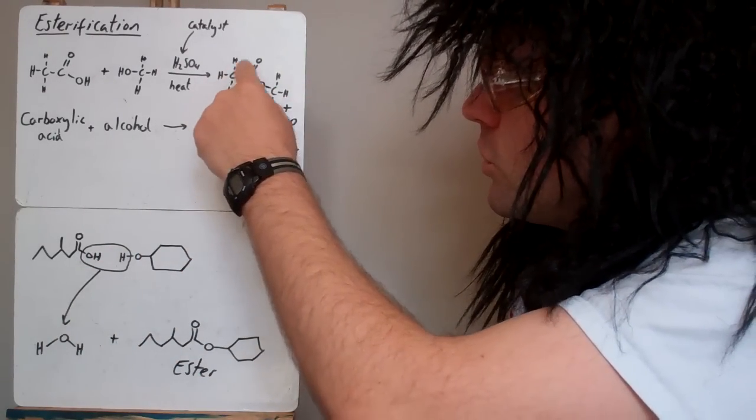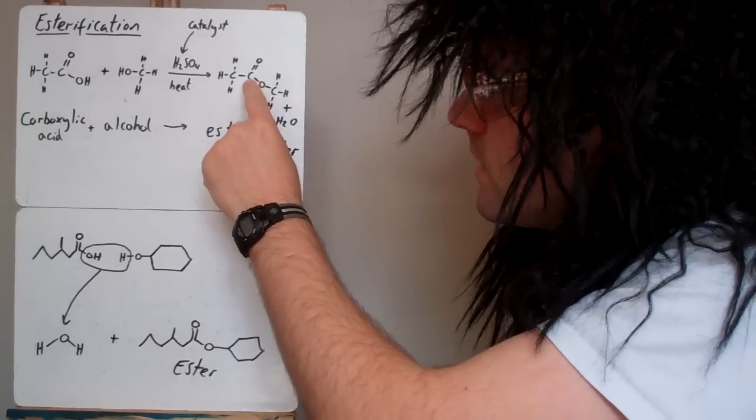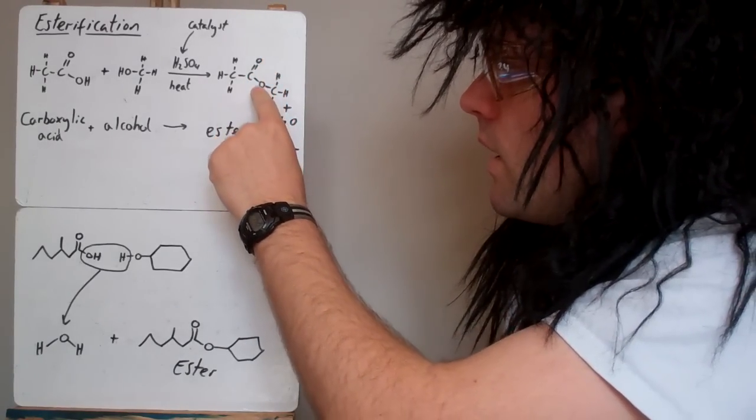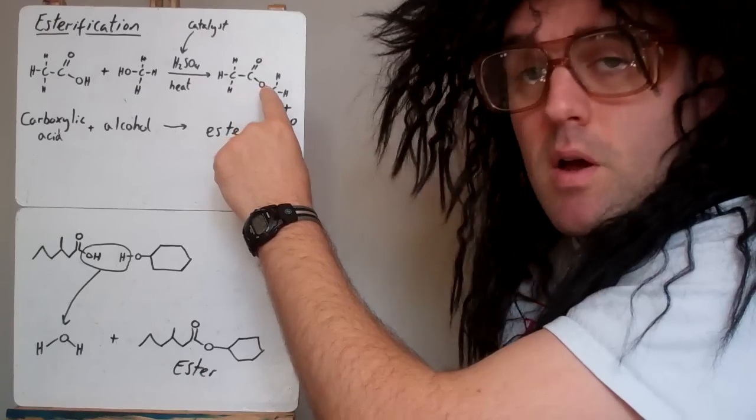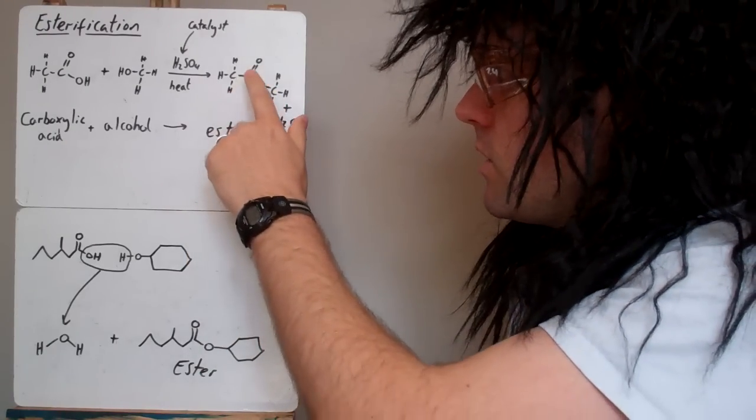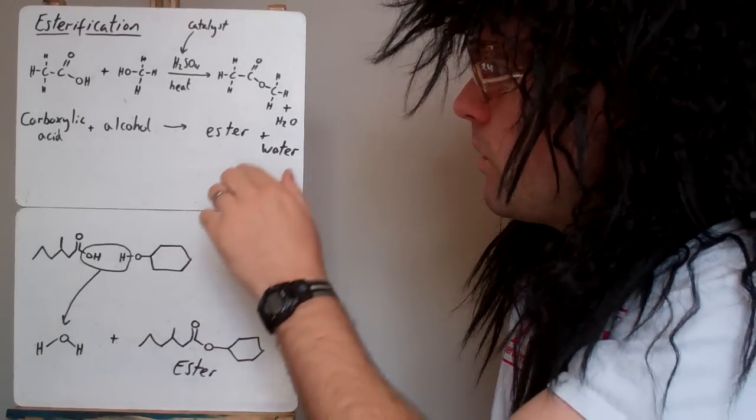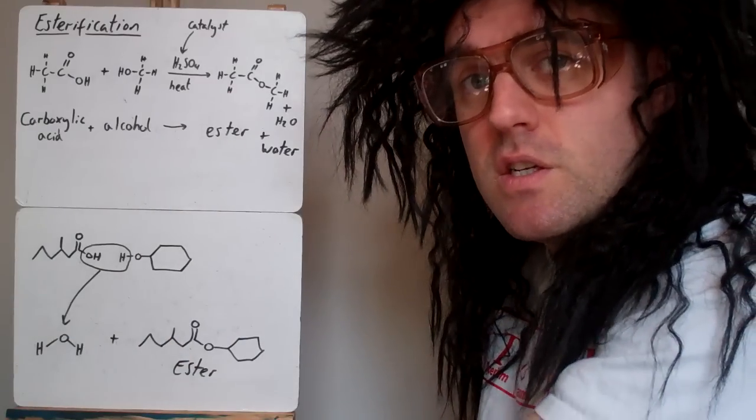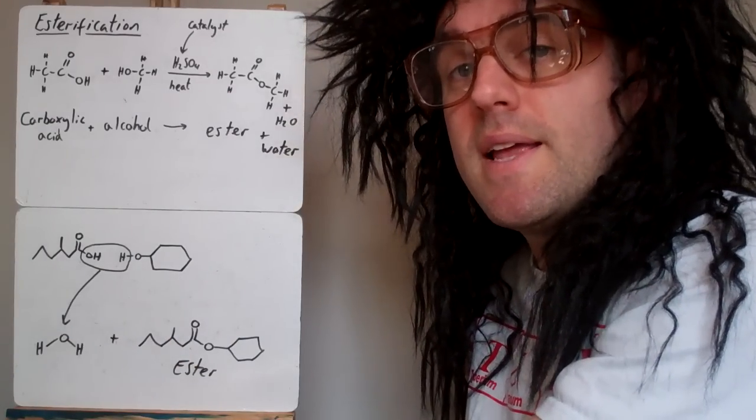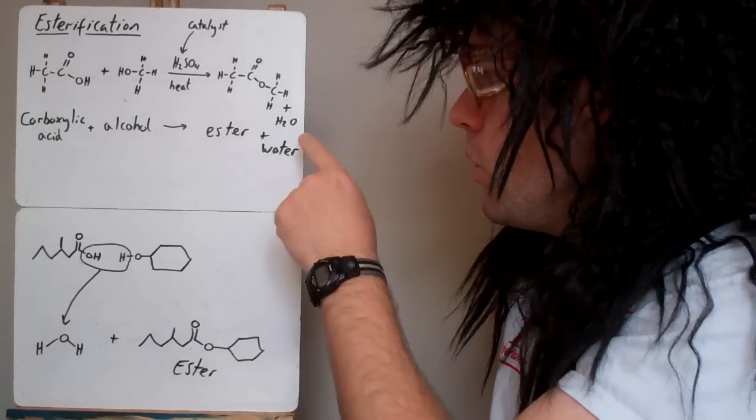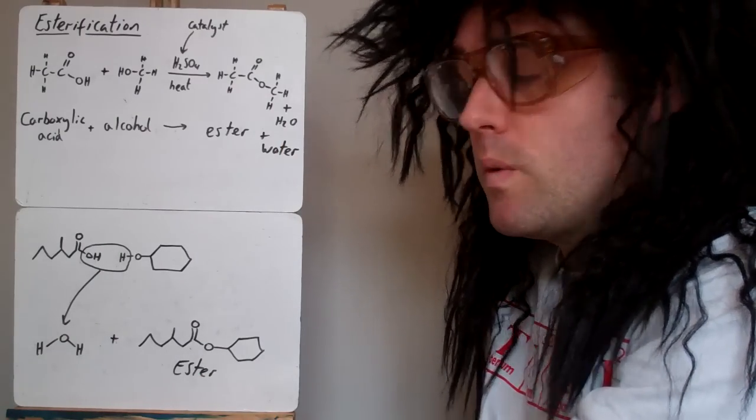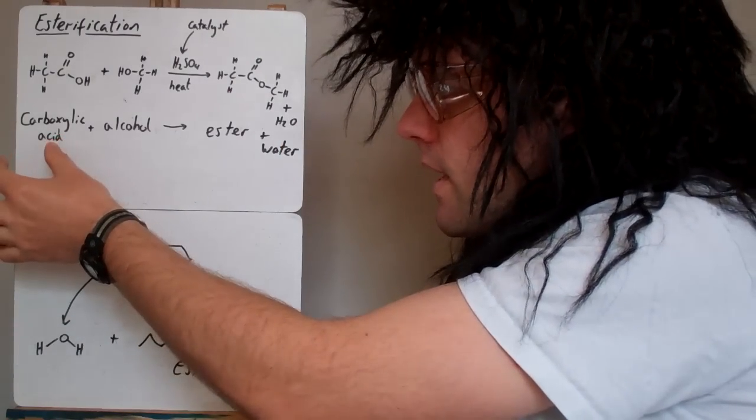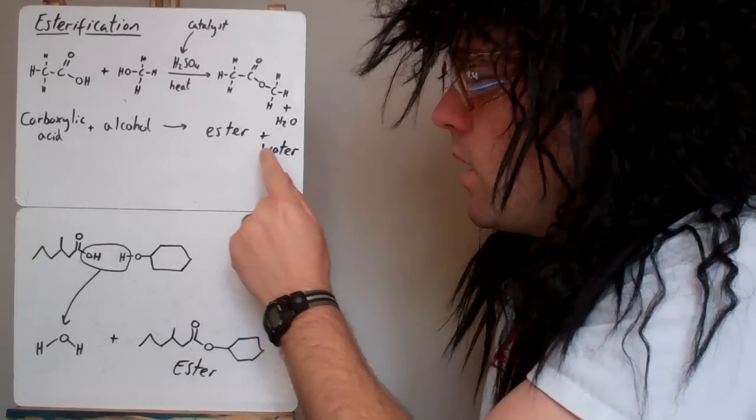Here's the ester that is produced in this case. All esters have a C double bond O and a single bond O on the same carbon. That's what makes an ester. This molecule here is not a ketone. Some people confuse that because they just look at that section, but having the O attached changes the properties and makes it an ester, not a ketone. You also produce a molecule of water when they react. Carboxylic acid plus alcohol makes ester plus water.